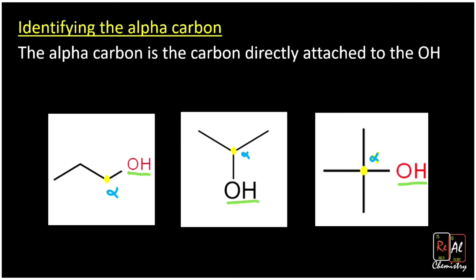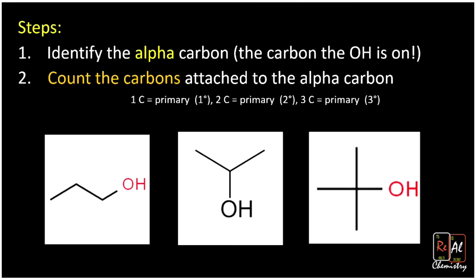Now let's add one more step that will help us nail down if something is primary, secondary, or tertiary. First we identify the alpha carbon — the carbon the OH is on — then we count the carbons attached to the alpha carbon. For this primary example, the alpha carbon has just one carbon directly bonded to it. When we say attached, we mean directly bonded — one bond away. Having just one carbon attached to the alpha carbon means this is a primary alcohol.